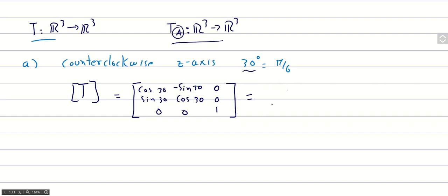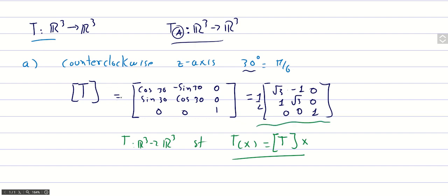And this matrix becomes just the matrix 1 half, square root of 3, minus 1, 0, 1, square root of 3, 0, 0, 0, 1. And with this is enough, you can associate the transformation from R3 to R3, such that T of x, any vector, is given by this matrix representation of the transformation times the vector. Okay, so with defining the matrix associated to this linear transformation is enough.